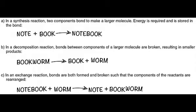An exchange reaction is a chemical reaction in which both synthesis and decomposition occur. Chemical bonds are both formed and broken, and chemical energy is absorbed, stored, and released. The simplest form of an exchange reaction might be A + BC → AB + C. To produce this product, B and C had to break apart in a decomposition reaction, whereas A and B had to bond in a synthesis reaction. A more complex exchange reaction might be AB + CD → AC + BD, or alternatively AB + CD → AD + BC.